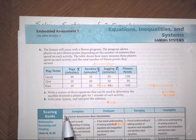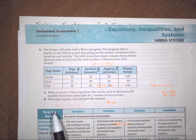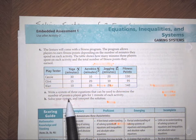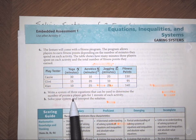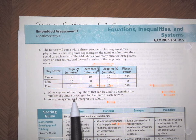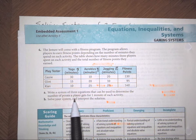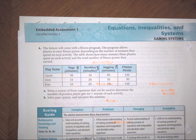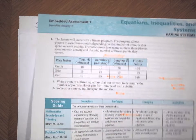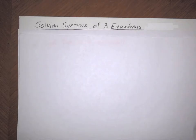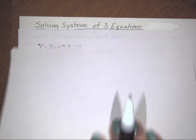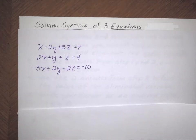Most of the time your Embedded Assessments will be all on one page, but always turn it over and look, because even I forgot — that's how rarely they go to the next page. It's very seldom that you have to turn the page to find the remainder of the Embedded Assessment. Now set that aside, and we are ready to look at solving systems of three equations with three unknowns.